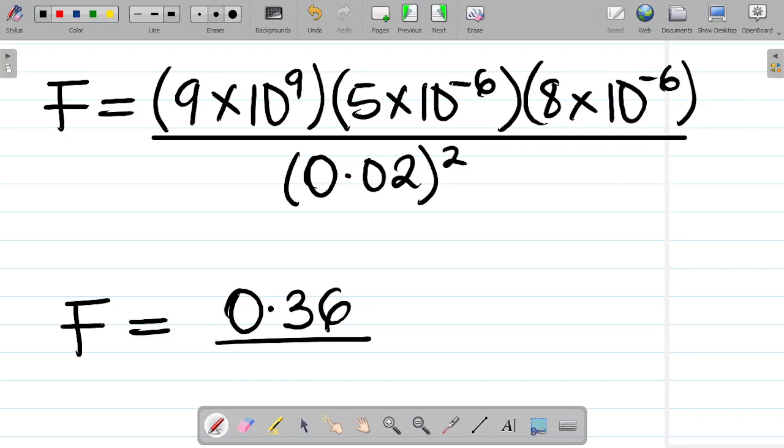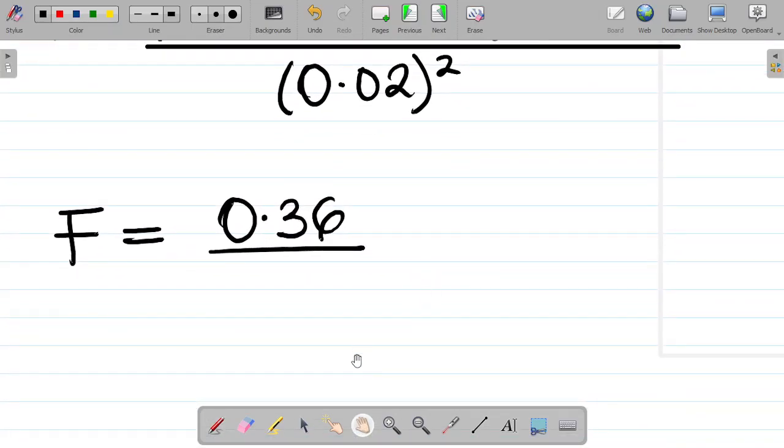All divided by... Let's look at the denominator. 0.02 squared. And if I punch 0.02 squared, that gives you 0.0004. I have this.